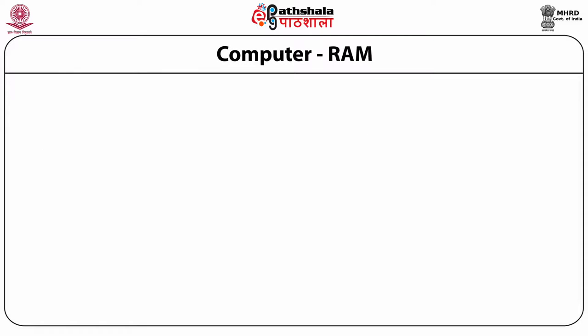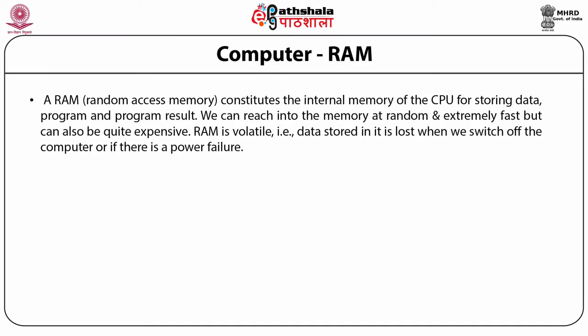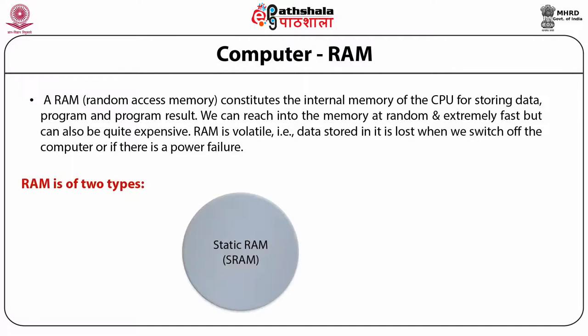Random access memory (RAM) constitutes the internal memory of the CPU for storing data, programs and program results. Information can be retrieved at random and extremely fast, but it is expensive. RAM is volatile — data stored is lost when the system is switched off or if there is a power failure. There are two types of RAM: static RAM (SRAM) and dynamic RAM (DRAM).